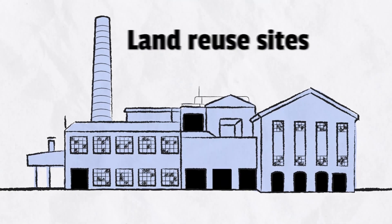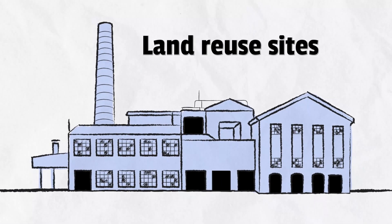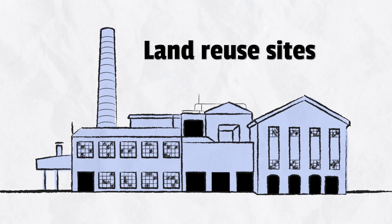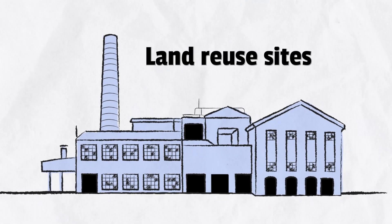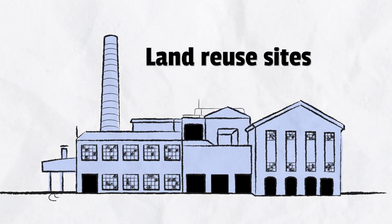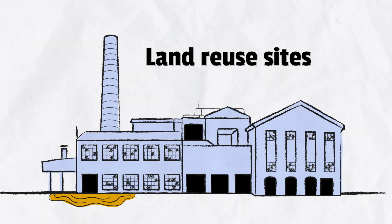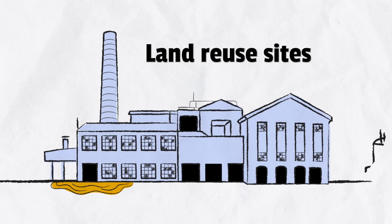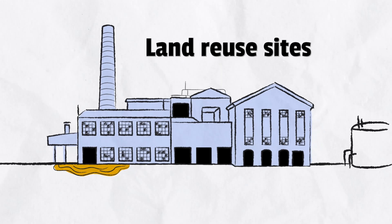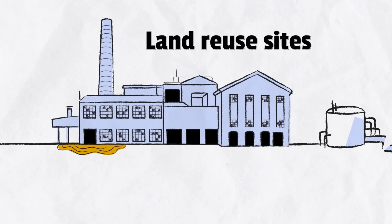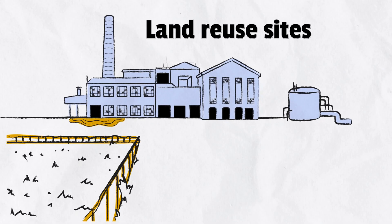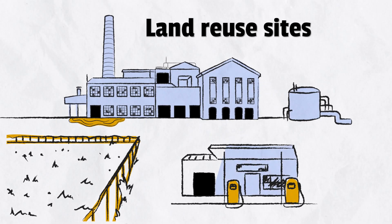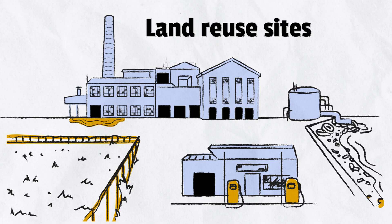Land reuse sites include brownfields, or old or vacant commercial, industrial, or residential properties. Chemicals used at the site, like lead-based paint or solvents, may have contaminated the water, soil, or air. A few examples include abandoned factories or houses, vacant lots, old gas stations, and polluted waterfronts.